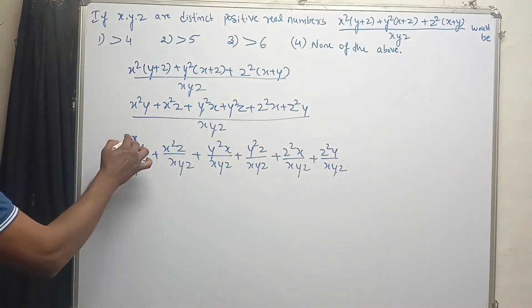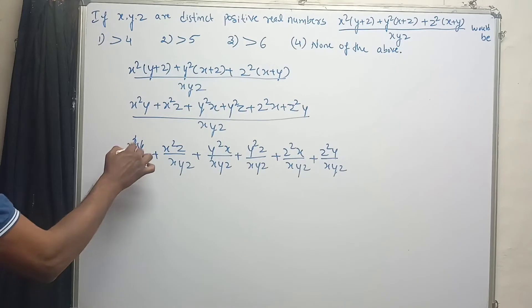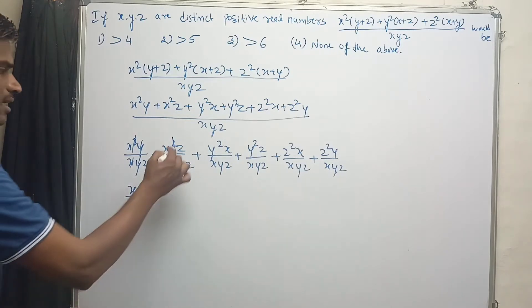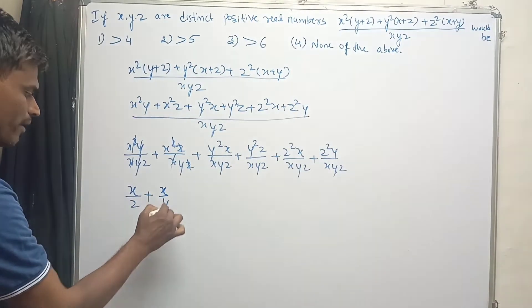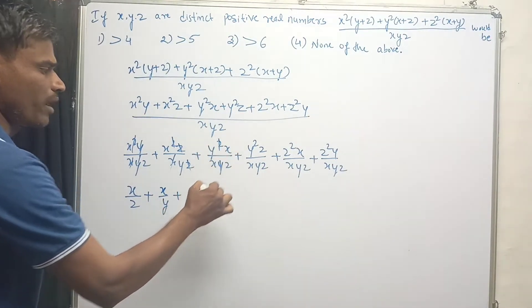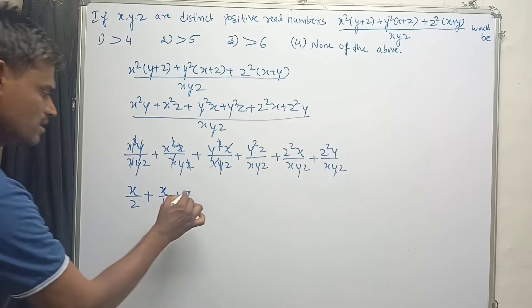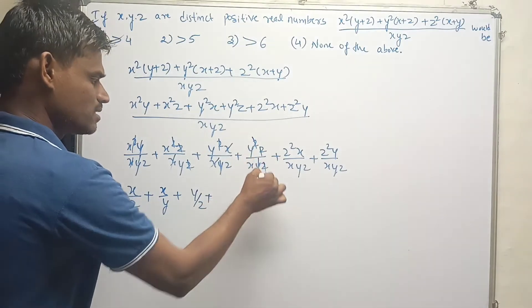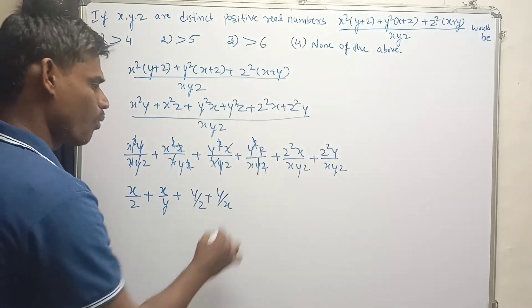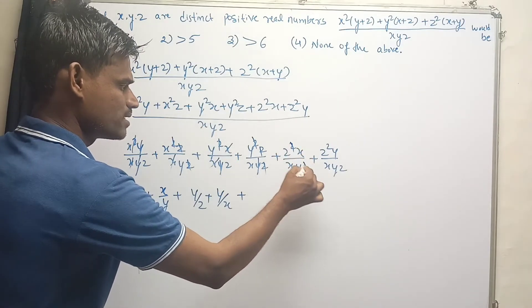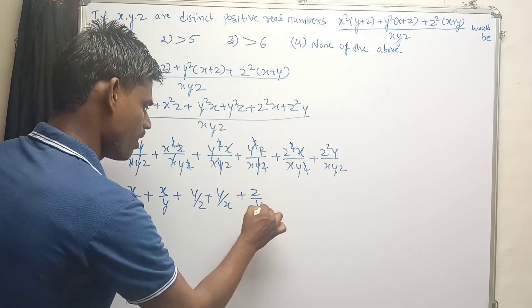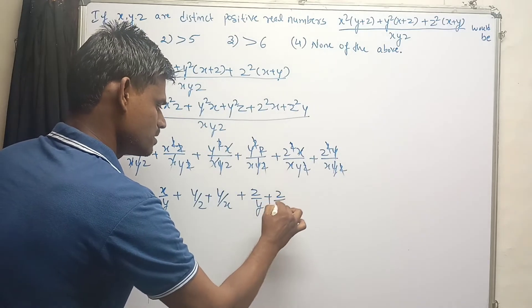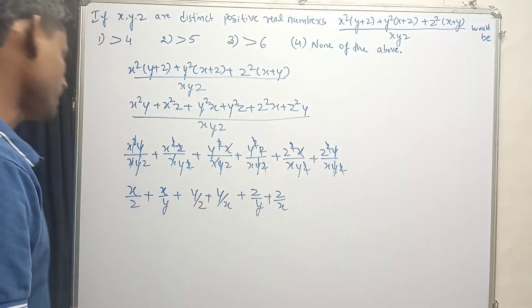Now, in the first term, x and y cancel, leaving x over z. In the second term, x and z cancel, leaving x over y. Then y and x cancel, leaving y over z. Next, y and z cancel, leaving y over x. Then z and x cancel, leaving z over y. And finally z and y cancel, leaving z over x.